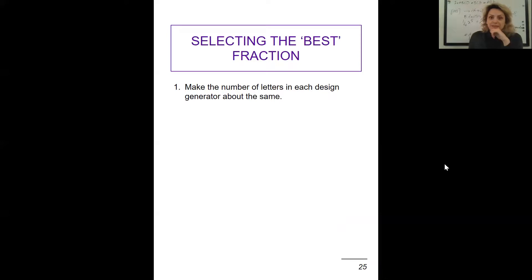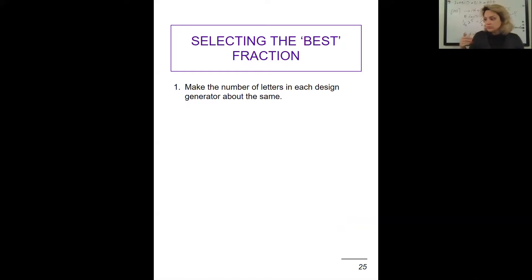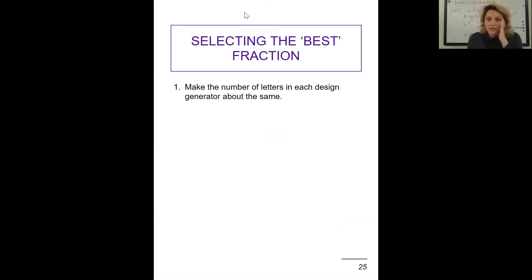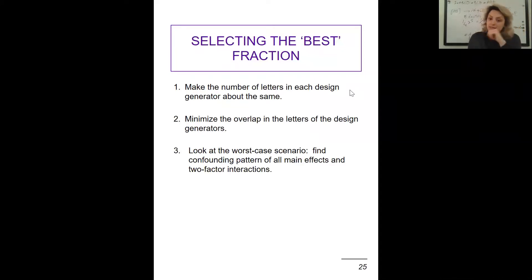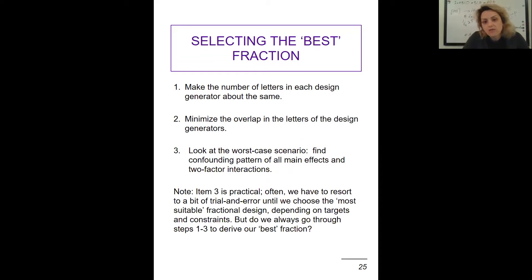Resolution 3 designs can be quite restrictive but are often a good way to start — useful for screening designs. Many times constraints force us to use resolution 3, but our goal is resolution 5. For selecting the best fraction: make the number of letters in each design generator about the same, minimize overlap in letters, and look at the worst-case confounding pattern of all main effects and two-factor interactions.